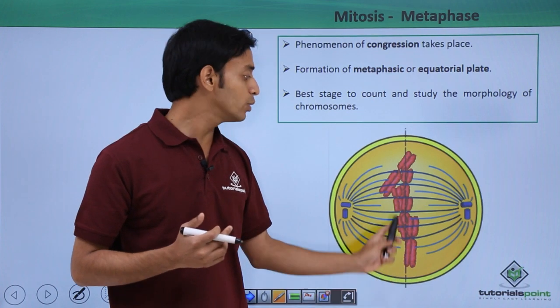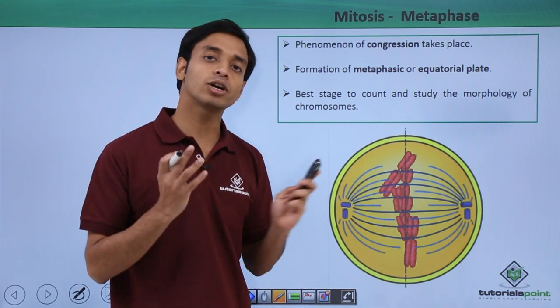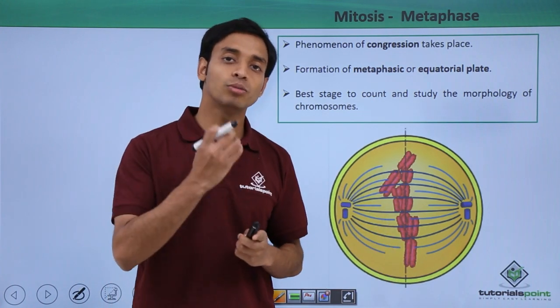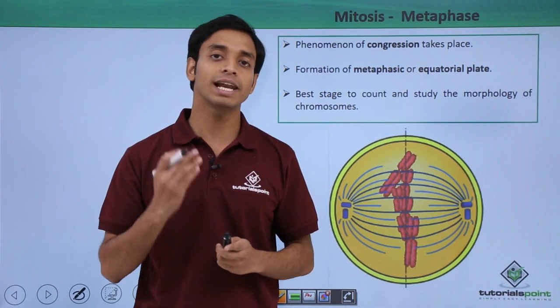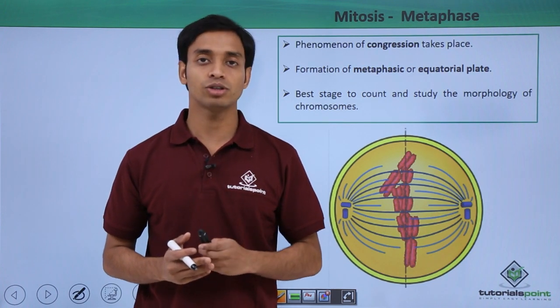As you can see here, the equatorial plate has taken place because all the chromosomes that are present inside the cell arrange themselves or align themselves at the central position of the cell.